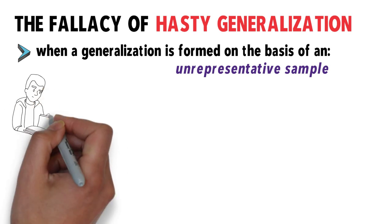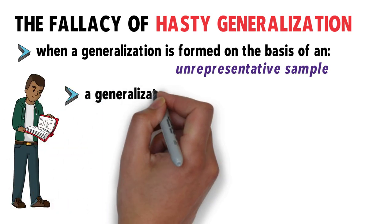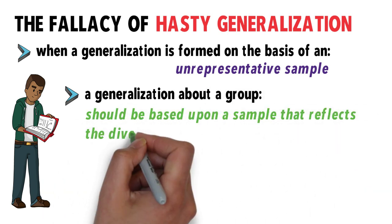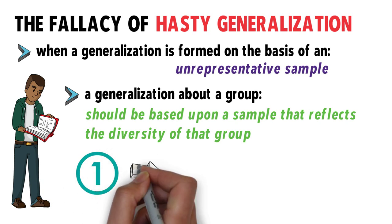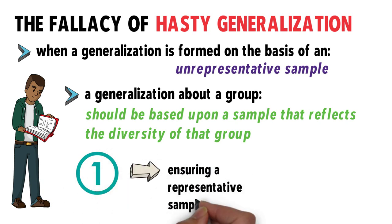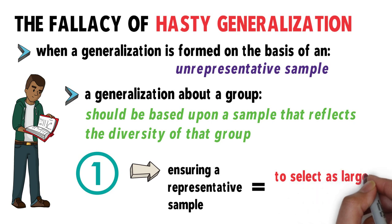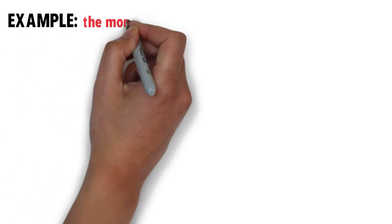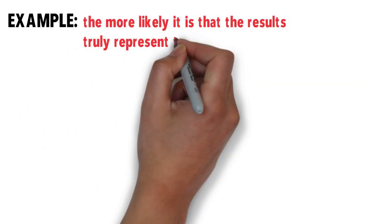As we may already know, to be accurate, a generalization about a group should be based upon a sample that reflects the diversity of that group. One way of ensuring a representative sample, in some cases, is to select as large a sample as possible. The more people polled, for example, the more likely it is that the results truly represent the group.